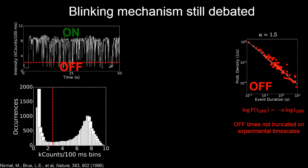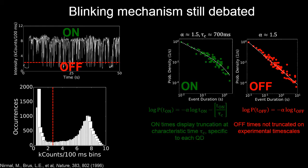Something to note about this distribution if you look in the literature is that the slope of this distribution, the alpha value, is usually centered around 1.5. Additionally, the durations of the off events are not truncated on timescales that we can see experimentally.